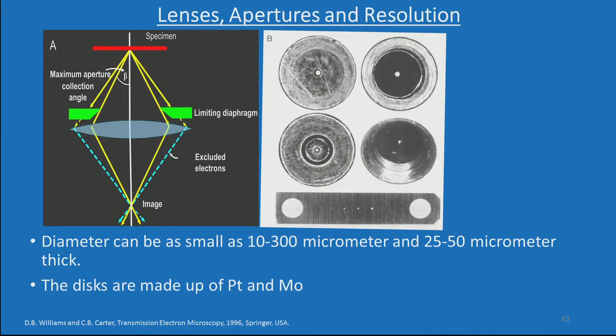Let me continue the discussion on the instrumentation details about the TEM. We just started looking at the electron source, the lenses, basic operations, and the types of electron source. We were also looking at some details about electromagnetic lenses and how they function. Today we will discuss about lenses, apertures, and their relation to resolution.